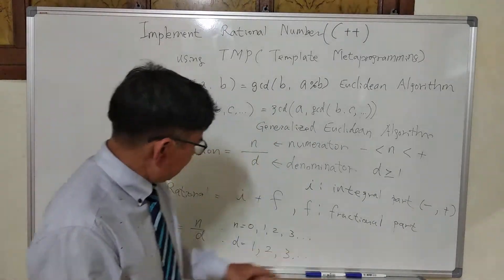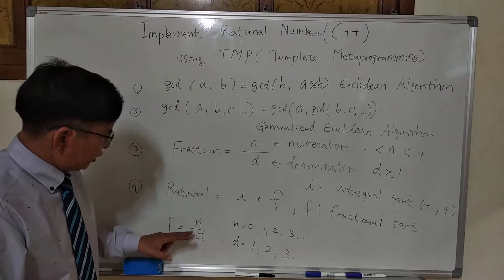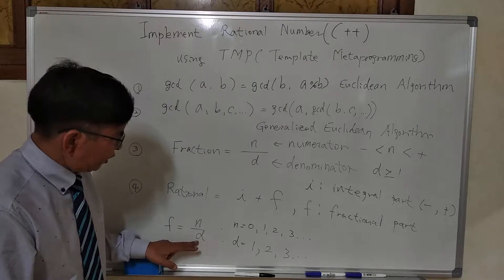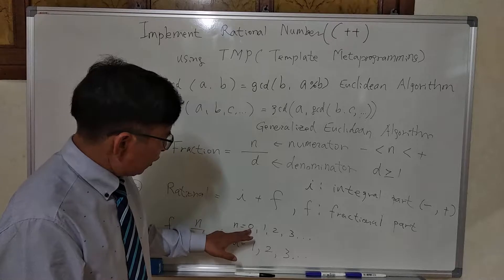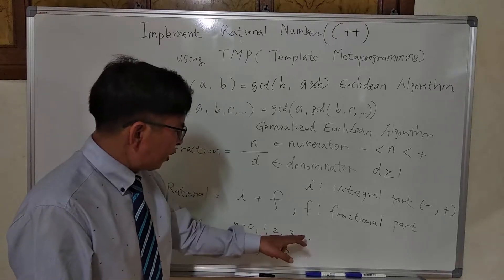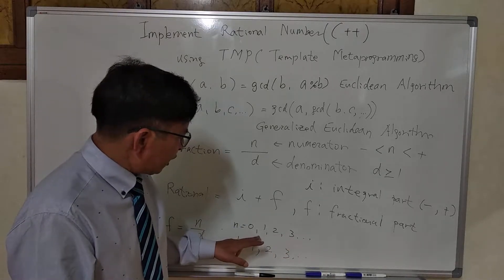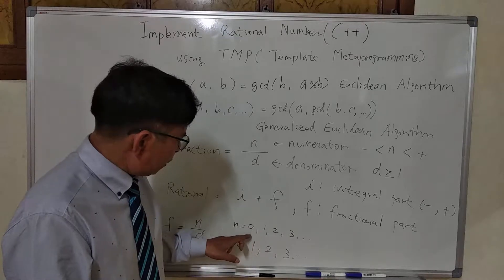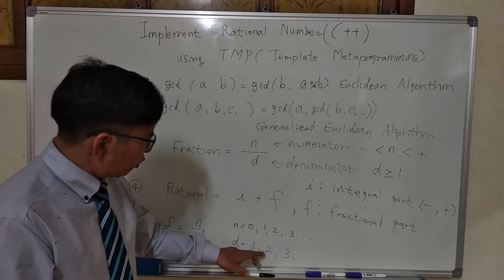But fractional parts can be defined like this: numerator and denominator. And numerator can be 0, 1, 2, 3, any integer greater than or equal to 0. And denominator will be 1, 2, 3.